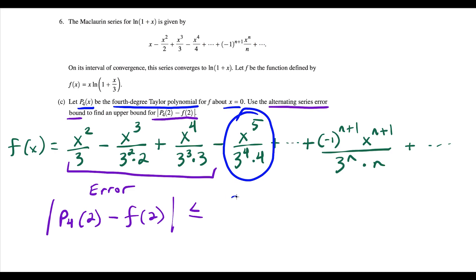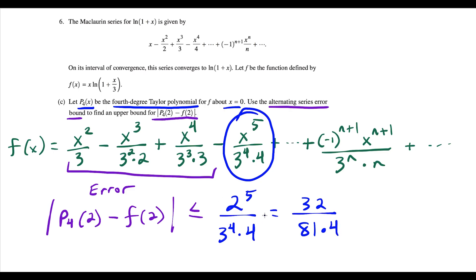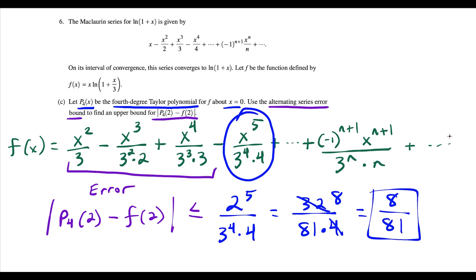So now we say this is equal to 2 to the fifth power over 3 to the fourth times 4. Simplifying: 2 to the fifth is 32, and 3 to the fourth is 81, so we have 32 over 81 times 4. And 32 divided by 4 is 8, so our error bound is 8 over 81. Just know that even if you can't simplify all the way, you could stop at the unsimplified form — but our final answer is 8 over 81.